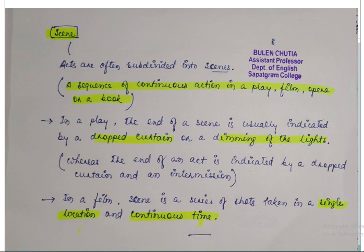An act is composed of or subdivided into many scenes. That is, scene is a sequence of continuous action in a play, fiction, opera, or a book in a single location and a continuous time. In a play, the end of a scene is usually indicated by dropped curtain or a dimming of the light. It is a temporary pause in a drama or a play.